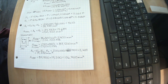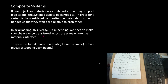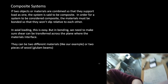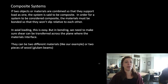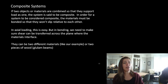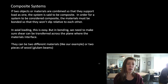Composite action: if two objects or materials are combined so that they support loads as one, the system is said to be composite. For a system to be composite, the materials must be bonded so they won't slip relative to each other. In axial loading this is easy, but in bending we need to make sure shear can be transferred across the plane where the materials interface. They can be two different materials or two different pieces of the same material.